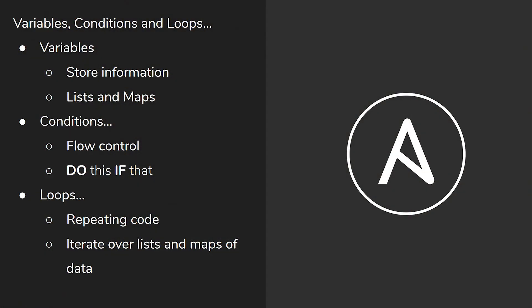And then finally in this section we're going to look at looping. What we're going to do is create some lists and maps that we can then loop over in our code, such as a list of users, or a map of users, or a map of packages, and so on. It will just loop over that list and run the task repeatedly with that information for you.